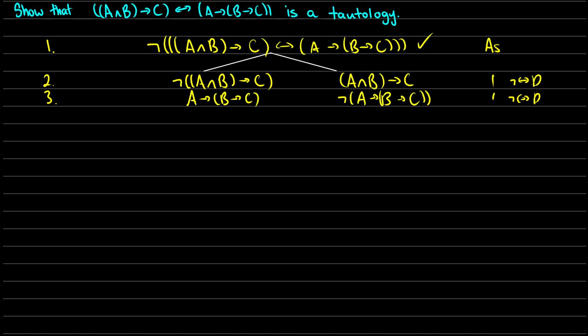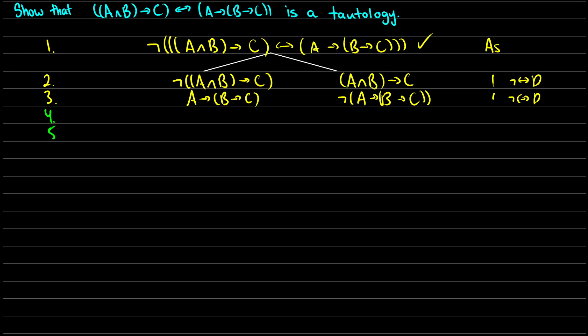I can already tell this is going to be a bit of a complex proof, but the nice thing is we first have not-arrow. Remember, if we have 'not-(a arrow b)', when is this not true? It's not true when a is true and b is false — the same as saying not-b is true. So we can break our not-arrows into the antecedent being true and the consequent being false. So on line 4 and 5, checking off line 2, we get 'a and b' is true and not-c is true. This comes from line 2, not-arrow decomposition.